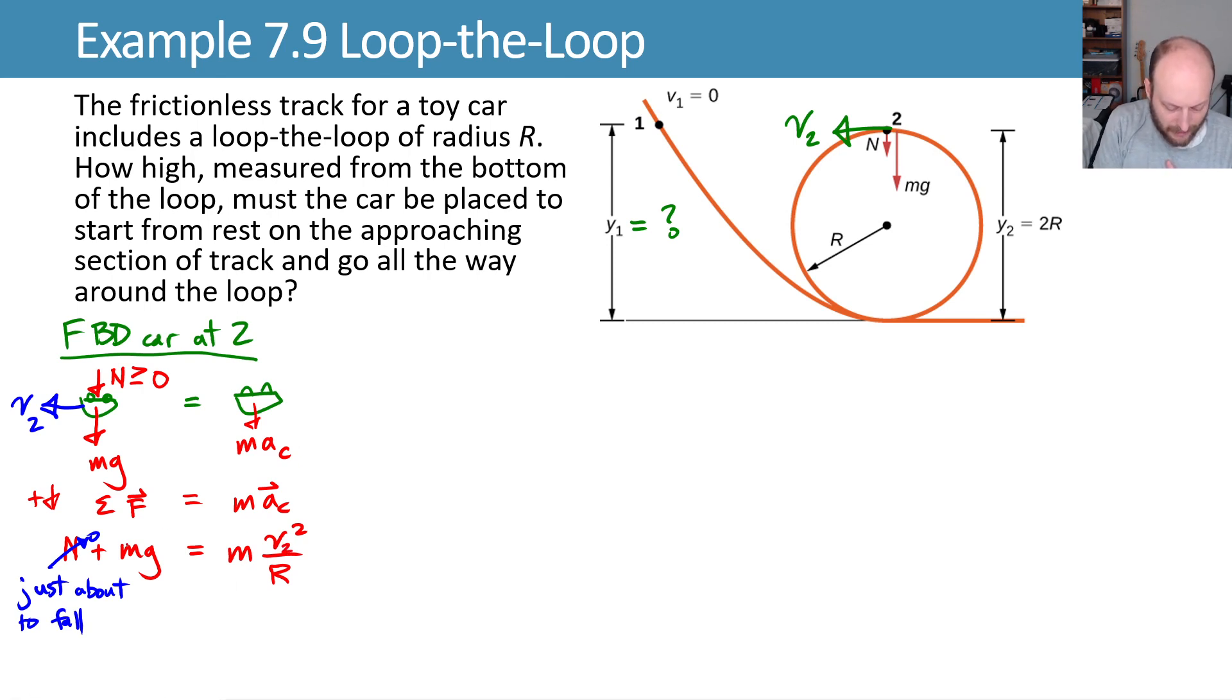So we'll divide both sides by m, it cancels the m, multiply by r. Let's not take the square root, let's just say v2 squared is equal to g times r and leave it there for right now.